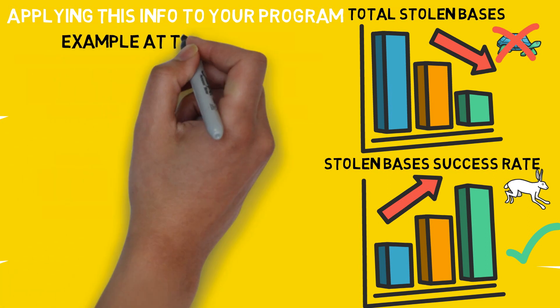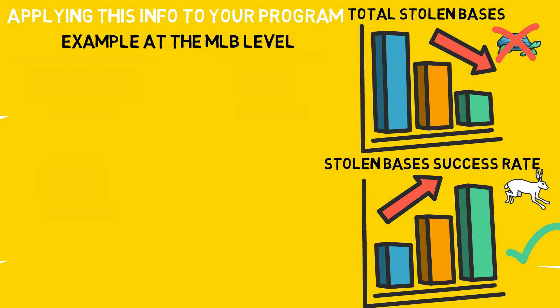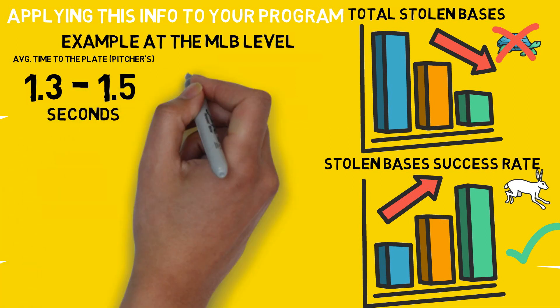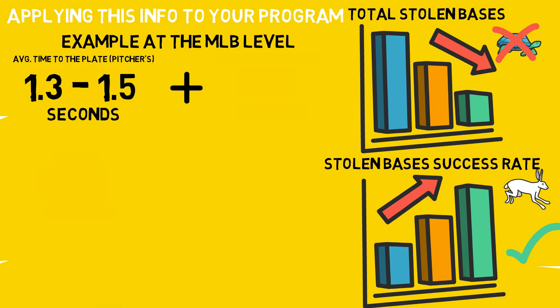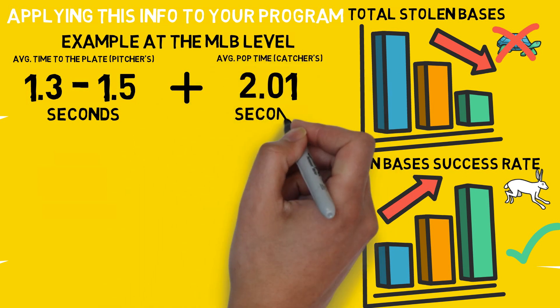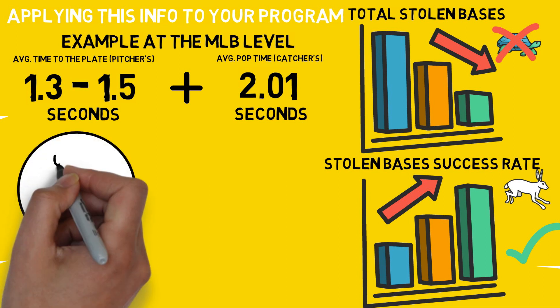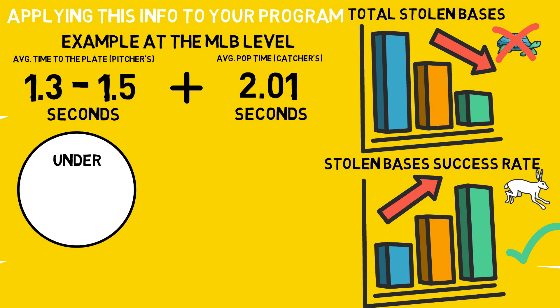Not all of us have decades worth of past data to help us make these kinds of decisions. An example of the way this can be used at any level is to take into account the amount of time it takes for the pitcher to deliver a ball to home plate, in addition to the amount of time it takes the catcher to fire that pitch all the way back down to second base — that gives you a single number. Take your base runners out to the diamond, have them get their leads and take off like they're stealing second base, and the players who make it under that time at least 7 out of 10 times become your base stealers. Simple as that.